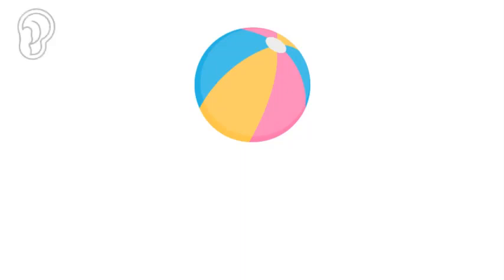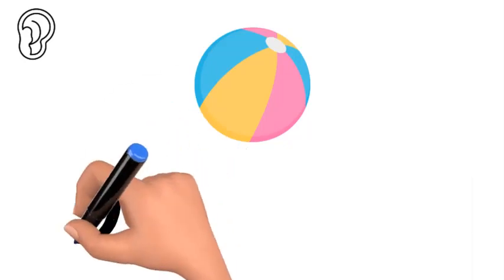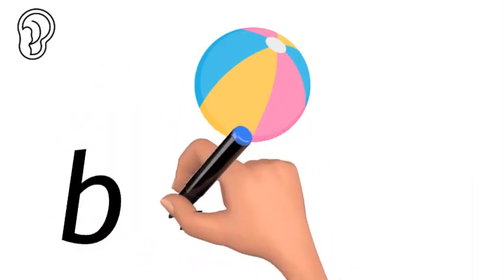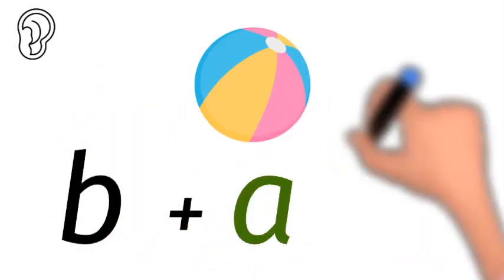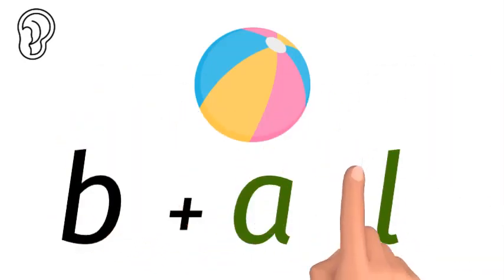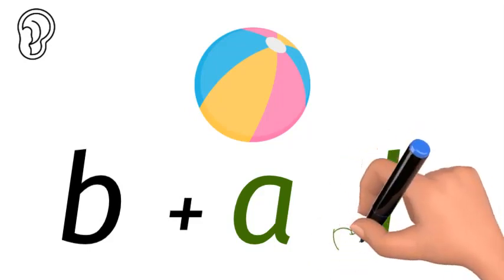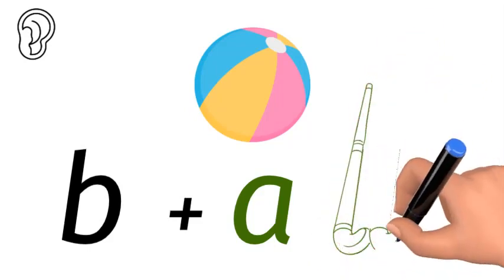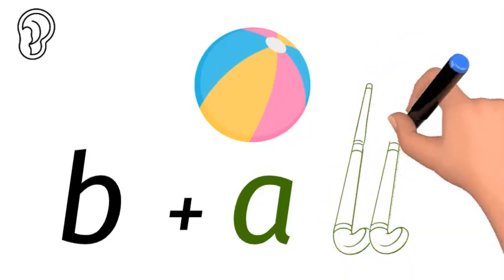Ball. What sounds do we hear in the word ball? It starts with a b followed by an 'all' sound. 'All' is actually a word on its own — it's a-l-l. And to help you remember there's two l's, I've put two hockey sticks.